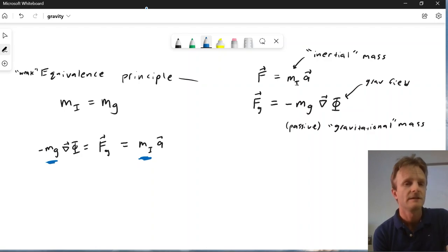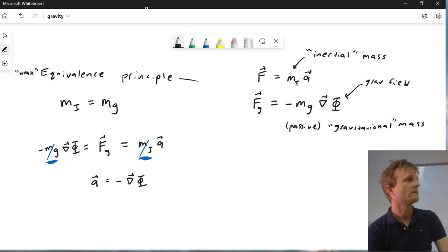the fact that we've decided by the weak equivalence principle, or really it's just observed, that these two are the same means they cancel. And you get an equation a is minus gradient of phi with no mass at all.